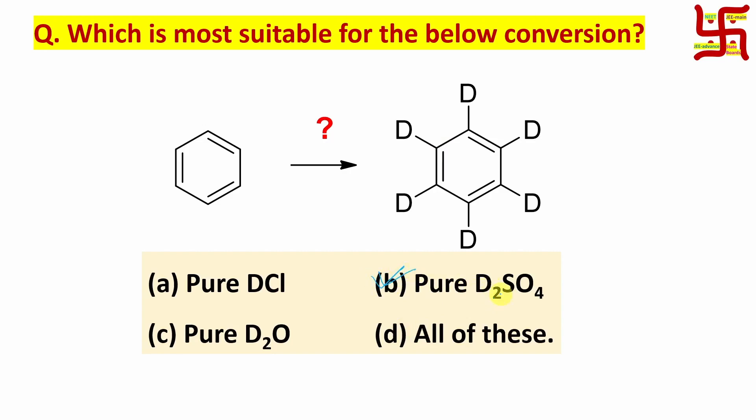D₂SO₄. Why? Remember one statement: among all inorganic acids, this is actually the stronger one. Stronger acid - I'm not saying strongest. There is a reason. Acids which are further stronger than sulfuric acid are called superacids. Let me give you one example. HClO₄, perchloric acid. If you mix perchloric acid and sulfuric acid, who will act as acid and who as base? Perchloric acid donates proton and that donated proton is accepted by sulfuric acid. So perchloric acid is stronger than sulfuric acid. That's why it is a superacid.